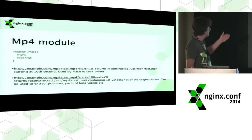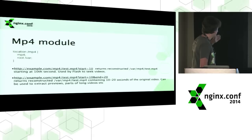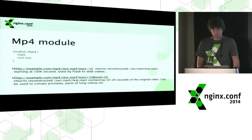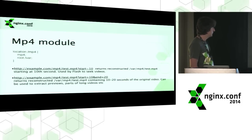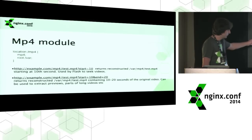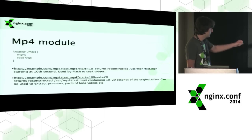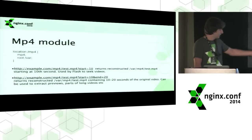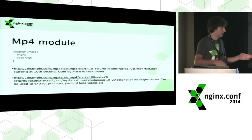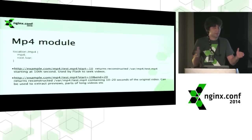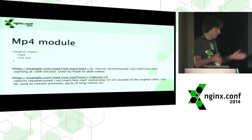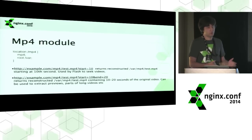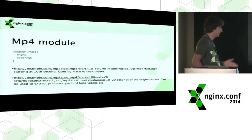Here's an example of MP4 module usage. The configuration can be as simple as a single MP4 directive, which enables MP4 pseudo streaming in that location. There are two example request formats: the first returns a reconstructed MP4 file starting at the 10th second of the source video. The second request cuts the file at both ends — this is not supported by Flash but is a separate feature that makes it possible to extract a preview or a sub-clip of an MP4 file, which is quite useful if you want a preview of a larger video on your website.